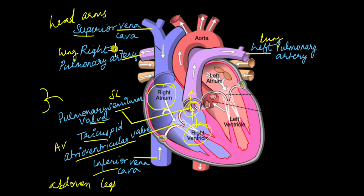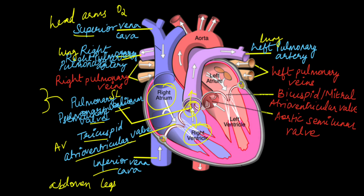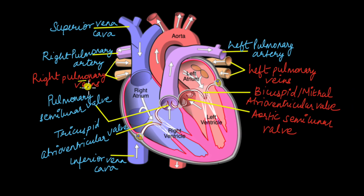At the lungs, blood is oxygenated. From the lungs, oxygenated blood is picked up by the pulmonary veins — the right pulmonary veins pick up blood from the right lung, and the left pulmonary veins pick up blood from the left lung. Through the pulmonary veins, oxygenated blood enters the left atrium.